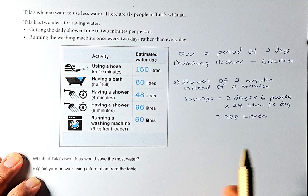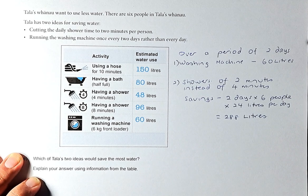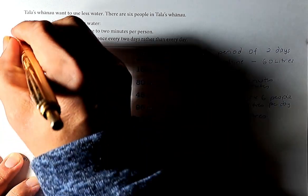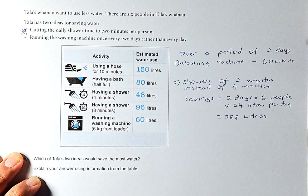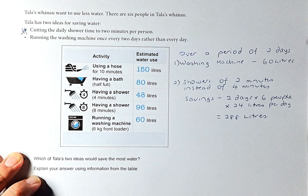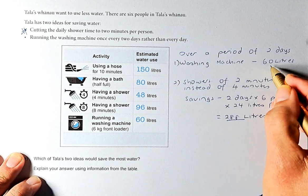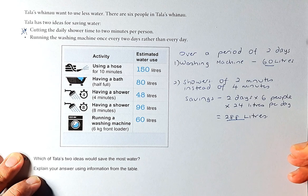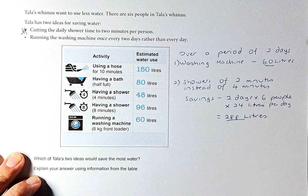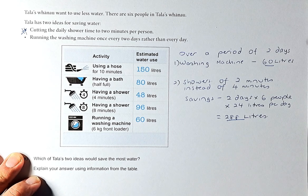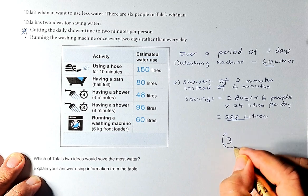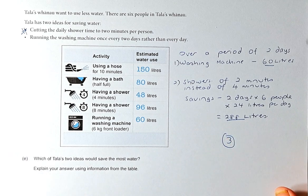Which of the two methods is going to give you a better way to save money? The answer is going to be cutting the daily shower time to two minutes per person. You're going to save a lot more, 288 compared to 60 litres when you cut down the washing machine by only doing once every two days. That is outcome number 3 because there's a lot of calculation involved.